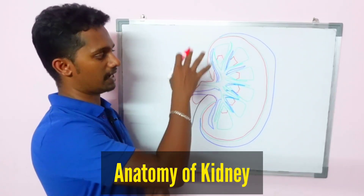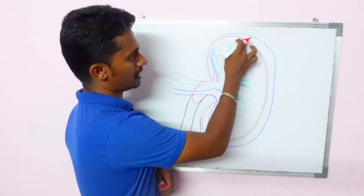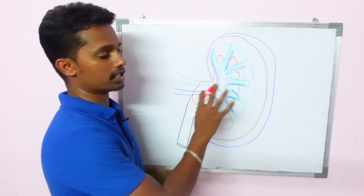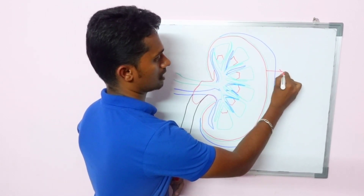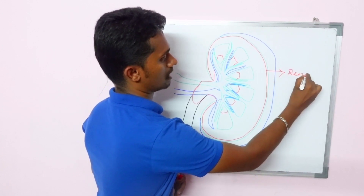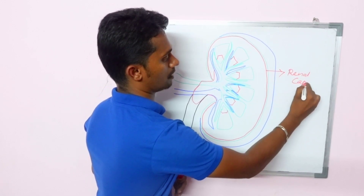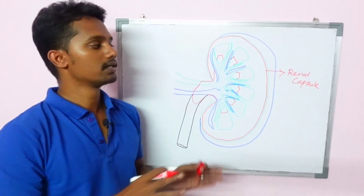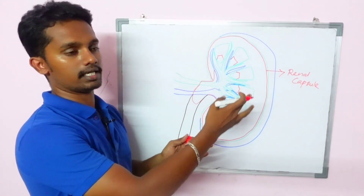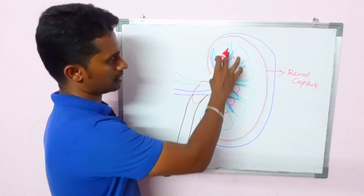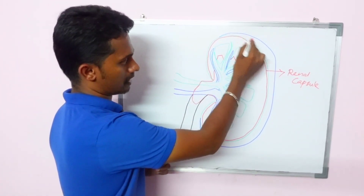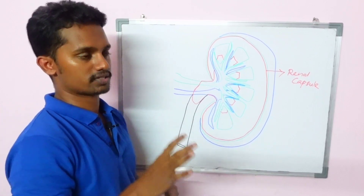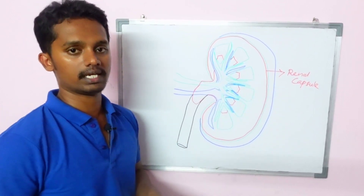If you look at the anatomy of the kidney, we don't want to use the kidney directly. The kidney is made of different components. Let's start with this one. This is called the Renal Capsule. Renal means kidney. The kidney has an outer structure, and that outer covering is why it's called the Renal Capsule.